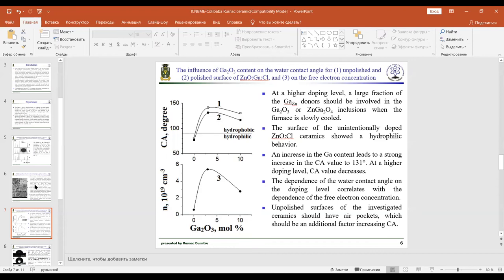For unintentionally doped zinc oxide chloride ceramics and are maximum for heavily doped ceramics with 10 mole percent gallium oxide.